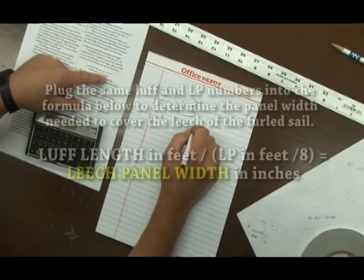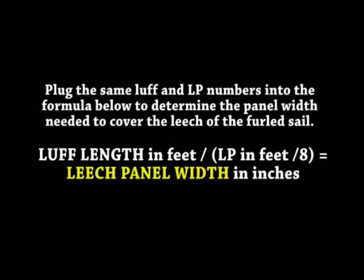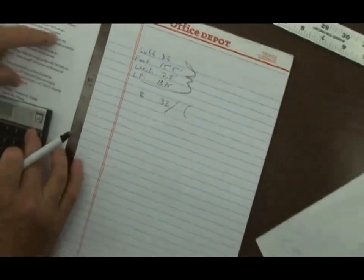Now that we have that, we'll concentrate on the leech panel width. We'll take the LP, divide it by 8, and then we'll divide the luff length by that calculation. So you'll be cutting your Sunbrella panel widths to equal this for the leech and the foot.